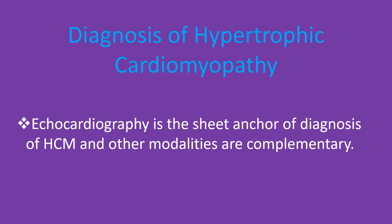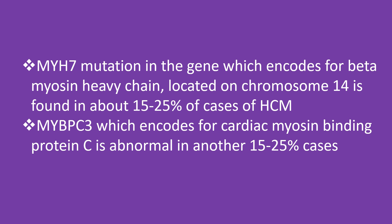Echocardiography is the sheet anchor of diagnosis of HCM, and other modalities are complementary. MYH7 mutation in the gene encoding for beta myosin heavy chain, located on chromosome 14, is found in about 15-25% of HCM cases. MYBPC3, which encodes for cardiac myosin binding protein C, is abnormal in another 15-25% of cases. Several other mutations have been described, some available for commercial testing.